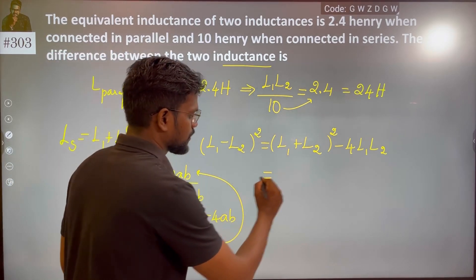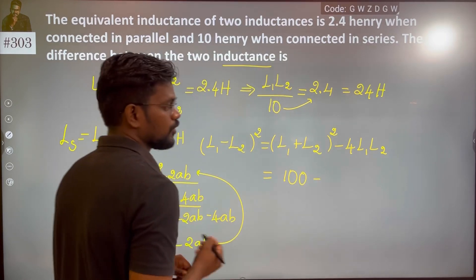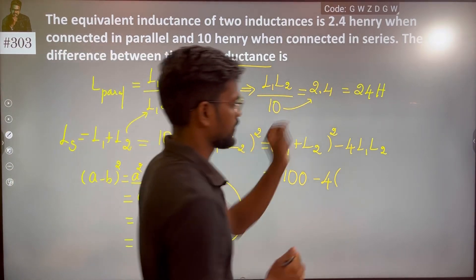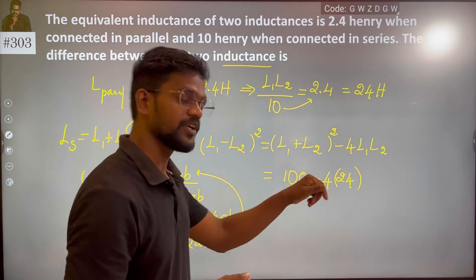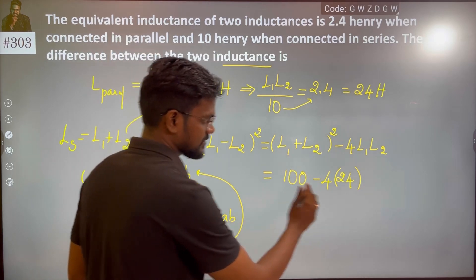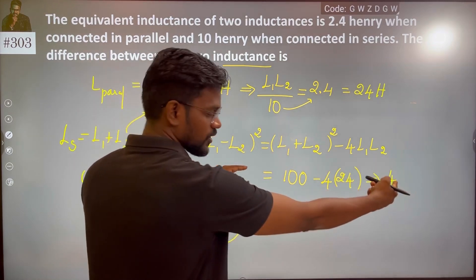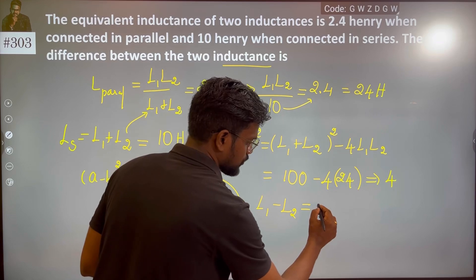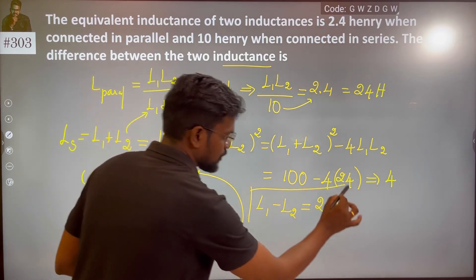Substituting: L1 plus L2 is 10, so squared is 100. Minus 4 times L1 times L2, which is 4 times 24 equals 96. So L1 minus L2 whole square equals 100 minus 96, which is 4. Taking the square root, L1 minus L2 equals 2.